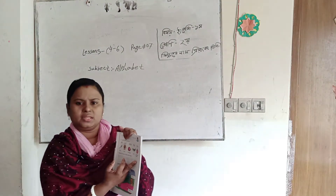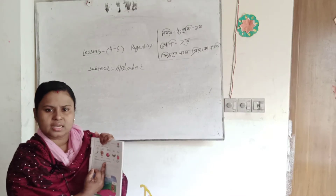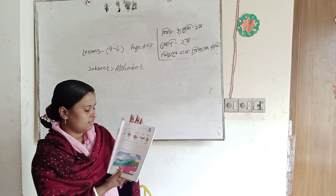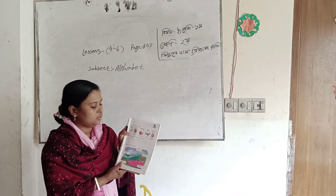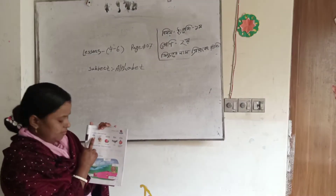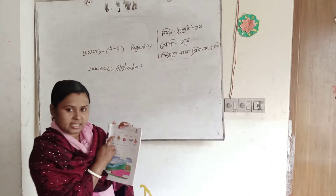Now, it is the alphabet that we have to learn. We will add the alphabet from K to Z. The first alphabet is K.